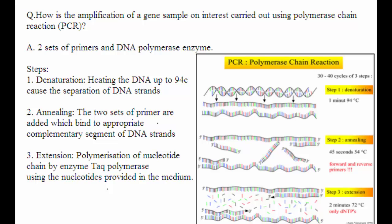How is the amplification of a gene sample of interest carried out using polymerase chain reaction? Polymerase chain reaction is the amplification of a gene of interest that is synthesized with two sets of primers and DNA polymerase enzymes.